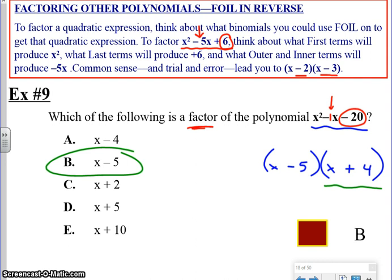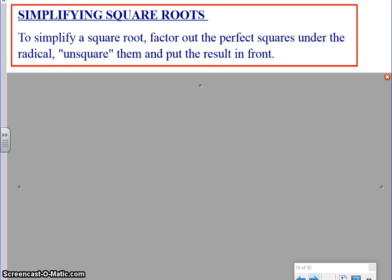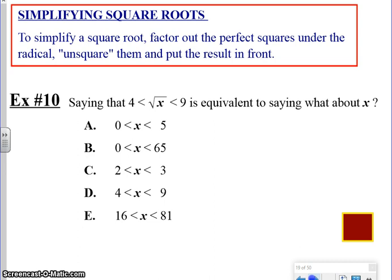Simplifying square roots. To simplify a square root, we're going to factor out the largest perfect square that's under the radical. I thought number 10 was kind of an interesting problem because it goes on to say that 4 is less than root of x, which is less than 9. And that's equivalent to saying what about x? What if we change from having the 4 and the 9 as integers? What if I change those to radicals? What I mean by that is 4 is equivalent to the square root of 16, which is going to be less than root of x, which is less than 9, which is going to be equivalent to root of 81. Once we have it written this way, I'm checking the answer choices and not finding anything. So what would happen if I simply squared everything? Now we're looking at 16 less than x, less than 81, which means that we're on to something. E is going to be our choice.